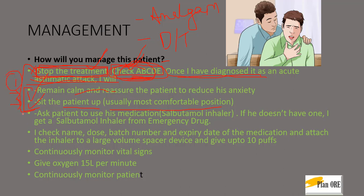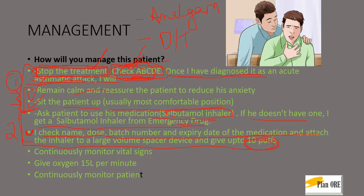The second part is administration of the drug. You will first ask the patient if he has an inhaler and to use it himself. If he doesn't have an inhaler, tell the examiner: 'I will get a salbutamol inhaler from the emergency drug kit.' For every medication, this line is important: 'I will check the name, dose, batch number, and expiry date of the medication.' Then attach the inhaler to a large volume spacer device and give up to 10 puffs. You don't need to explain the entire administration process unless they ask you to.